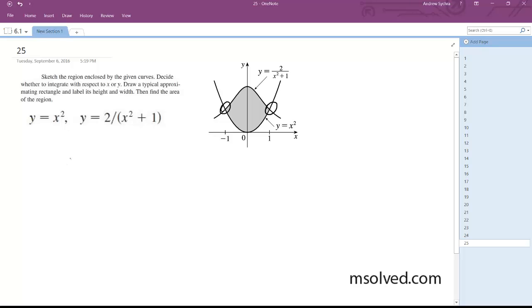Alright, so integration of this is the top, we're subtracting the bottom from the top. So the area here is going to be equal to from negative 1 to 1 of 2 over x squared plus 1 minus x squared dx.